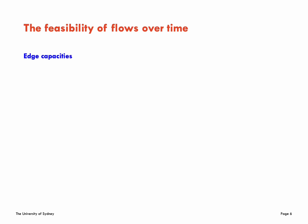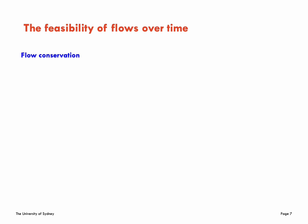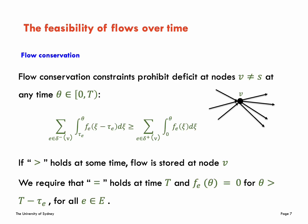Edge capacities: It means that capacities of edges limit the value of flow into edges. And flow conservation: It prohibits deficit at nodes v not equal to s at any time theta within the range of 0 to T. It means that the value of flow on edges into node v is more than or equal to the value of flow on edges out of node v.